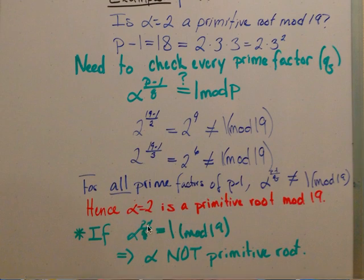If alpha to the (p minus 1) over q had been congruent to 1 mod 19 for any of them, alpha would not be considered a primitive root.